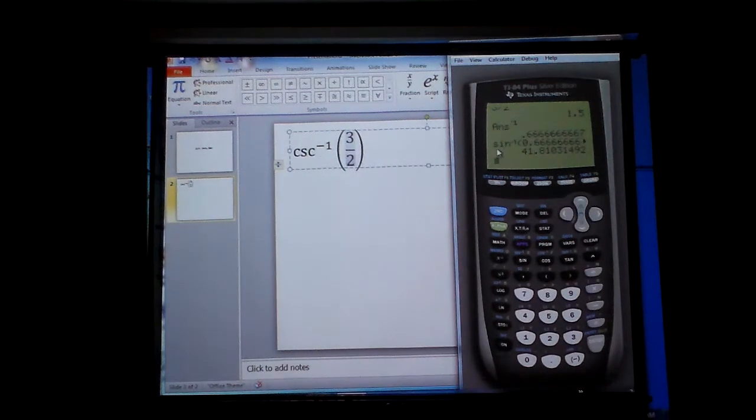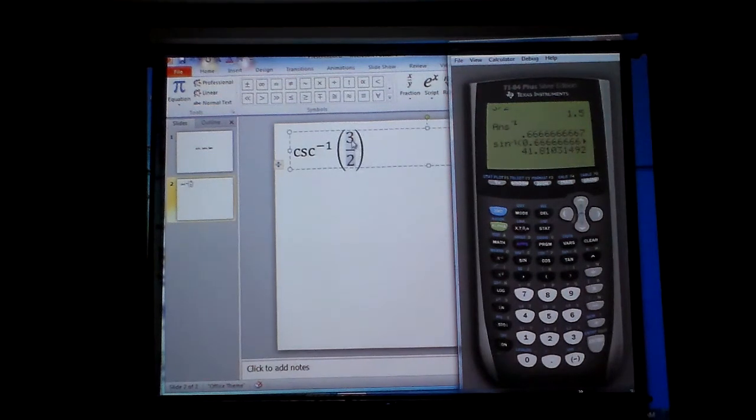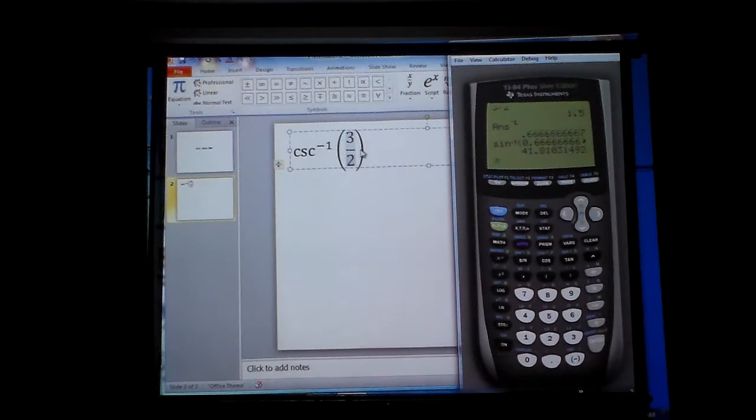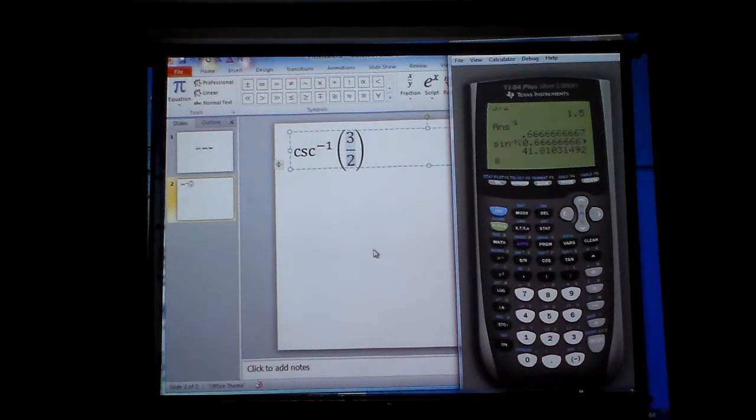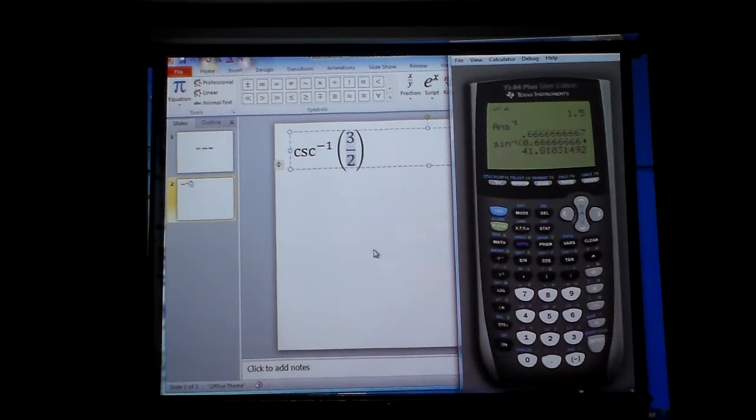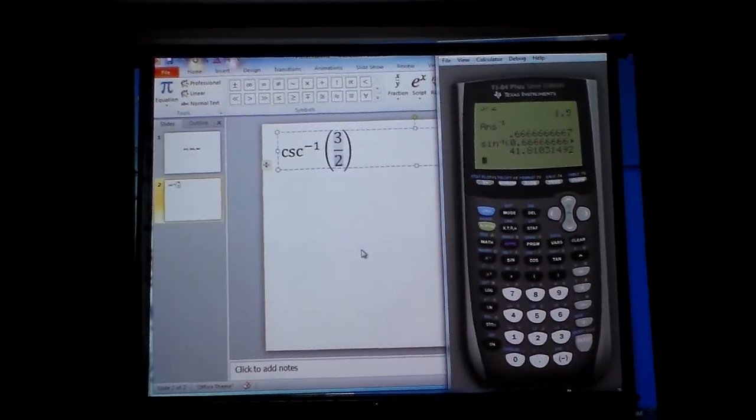But in order to find cosecant, you have to use the arc sine. But before you can do it, you must use the reciprocal of this. Whether you flip 3 over 2 to 2 thirds or whether you do it in the calculator and flip it, it has to be flipped before you can do arc cosecant. There is no arc cosecant, so you really got to do arc sine. But you have to reciprocate the numbers to do that.